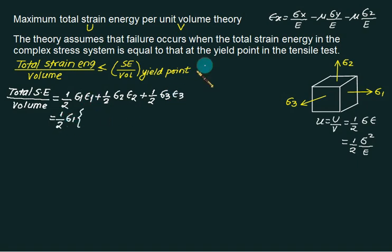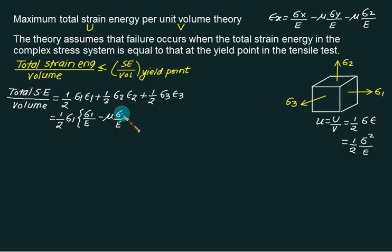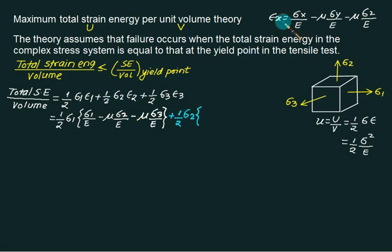To replace epsilon 1, we use: epsilon 1 = sigma 1/E − μ·sigma 2/E − μ·sigma 3/E. Similarly, epsilon 2 = sigma 2/E − μ·sigma 1/E − μ·sigma 3/E. We substitute these expressions into the total strain energy formula, taking principal stresses sigma 1, sigma 2, sigma 3 on the respective X, Y, Z faces.